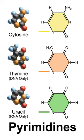The pyrimidine ring system has wide occurrence in nature as substituted and ring-fused compounds and derivatives, including the nucleotides cytosine, thymine, and uracil, thiamine, and alloxane. It is also found in many synthetic compounds such as barbiturates and the HIV drug zidovudine.